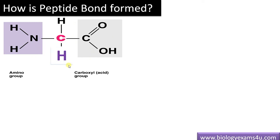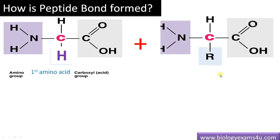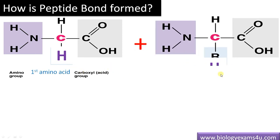If R is hydrogen, this is the simplest amino acid, glycine. So this is the first amino acid, and let's take one more glycine. Now we have two glycine molecules, and this is the second amino acid.